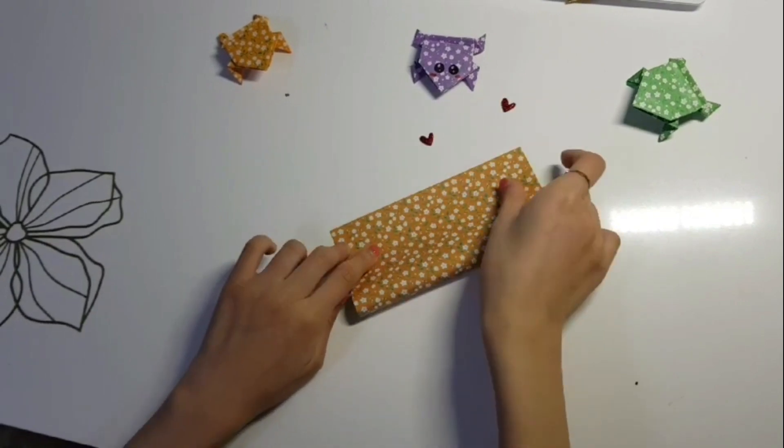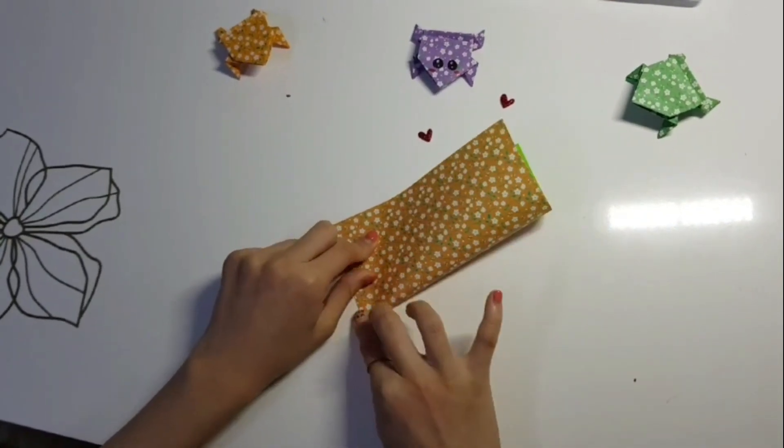First, fold your paper in half and then fold it again the other way to make a crease.